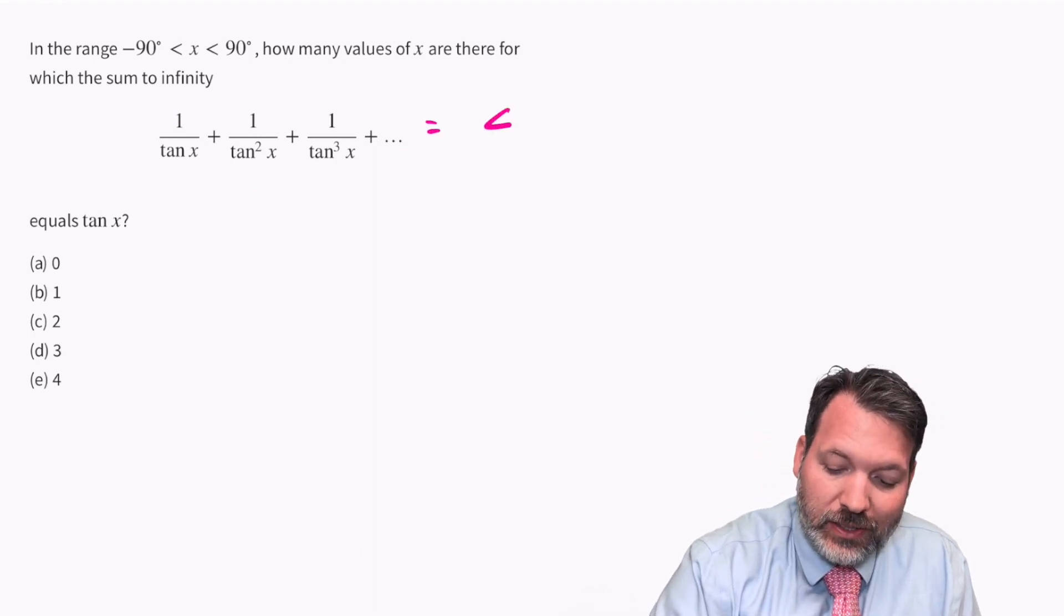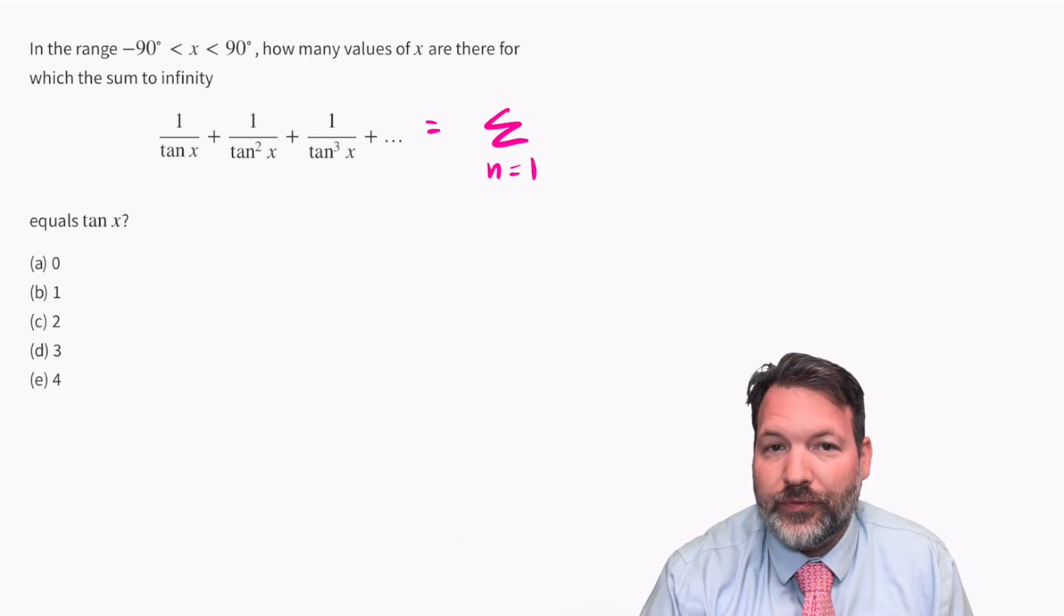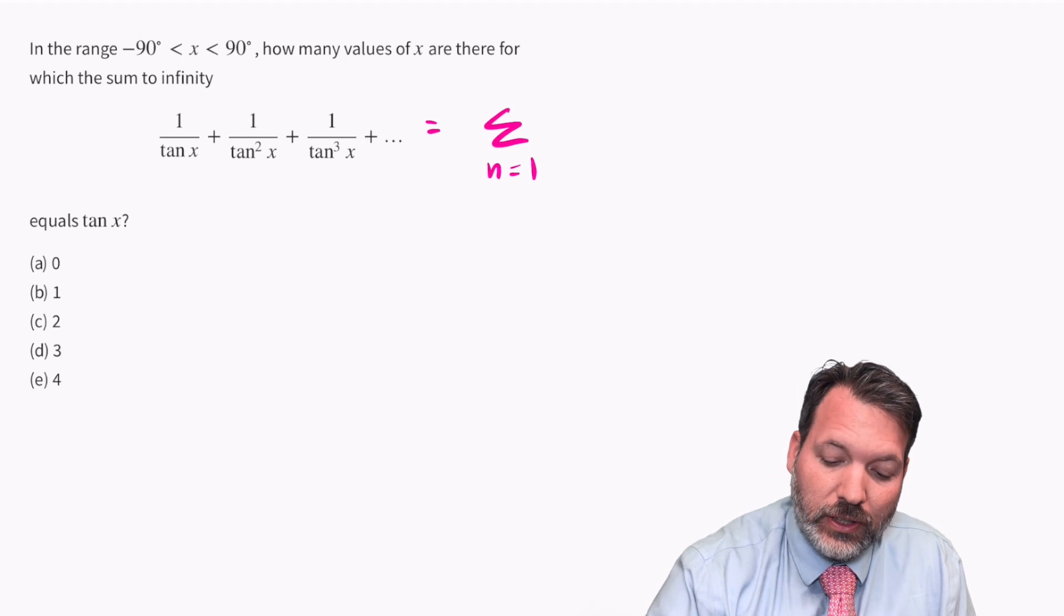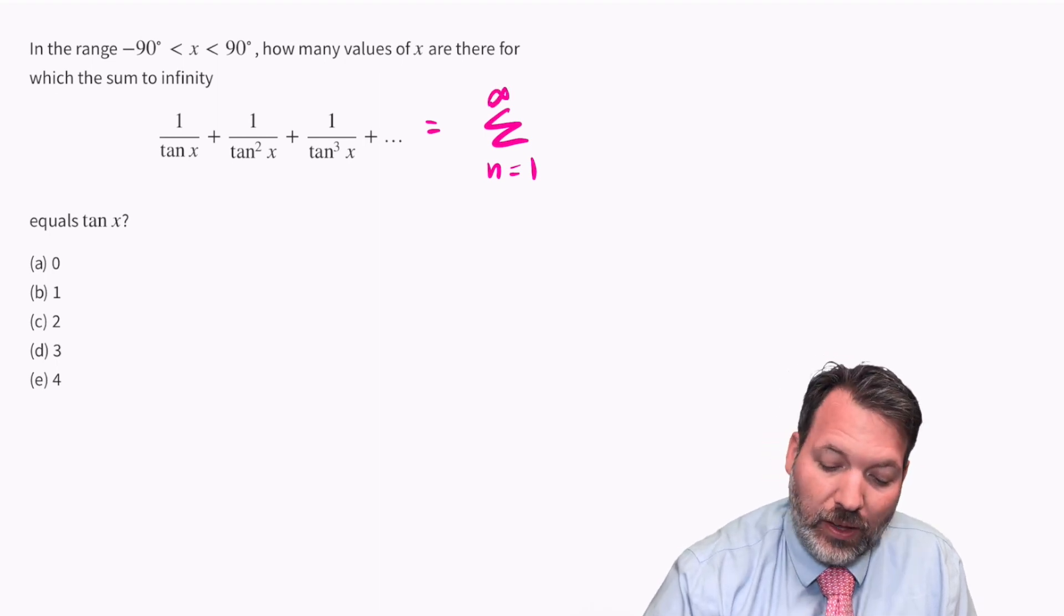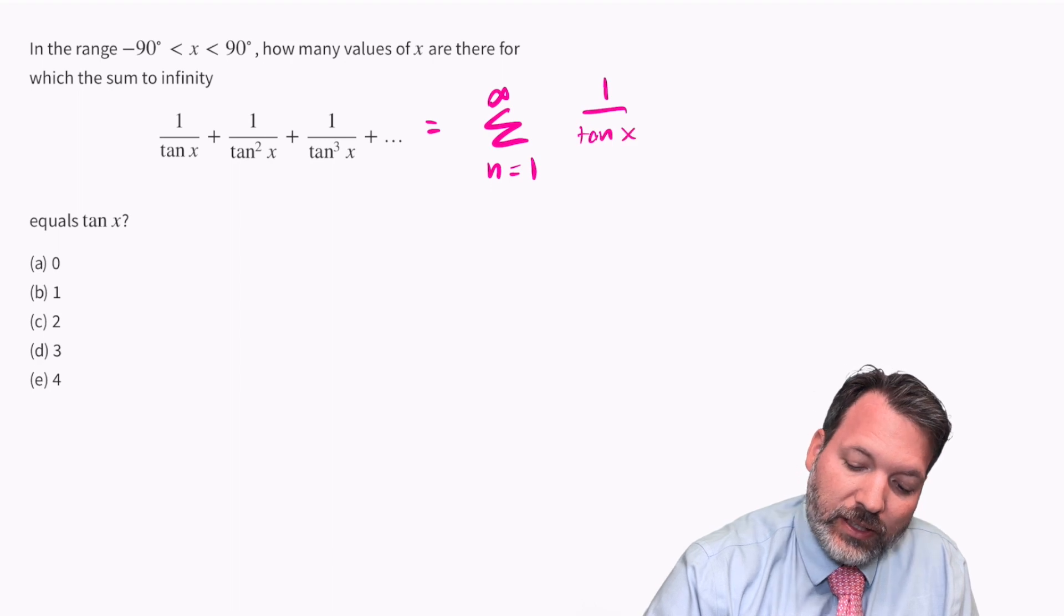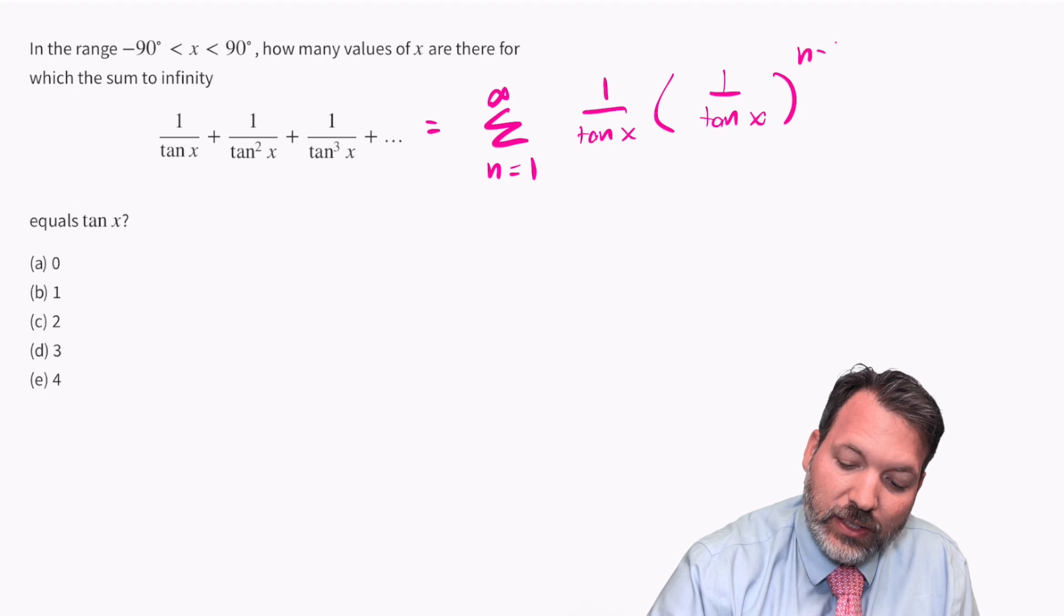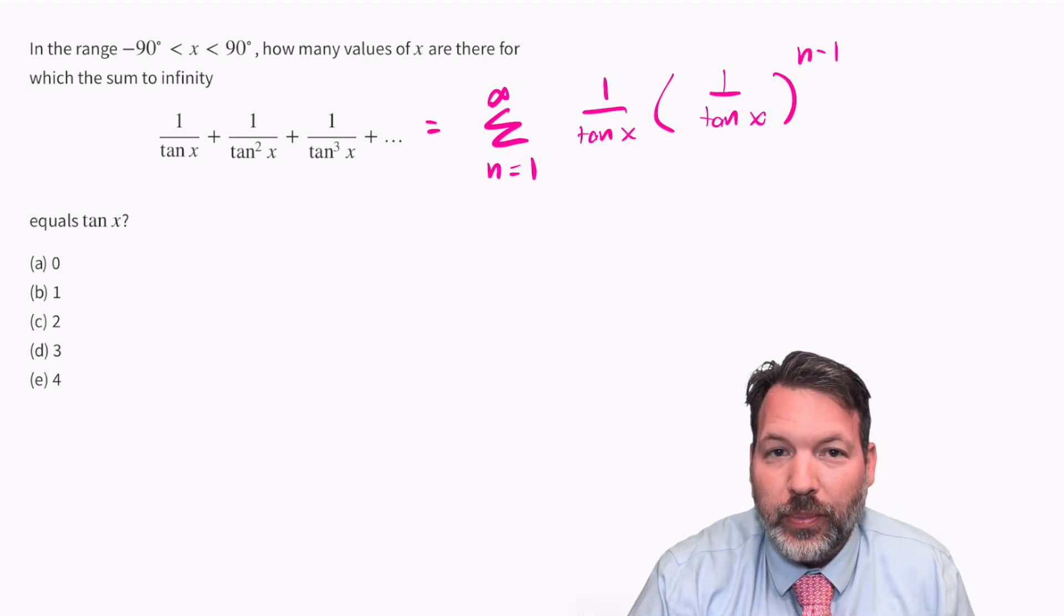Let's express this in series notation. We're going to go from one, my preference is to start at one, to infinity. We're going to do this infinitely many times starting at the term 1 over tangent x and then multiplying by a ratio of that same 1 over tangent x raised to the n minus one power.